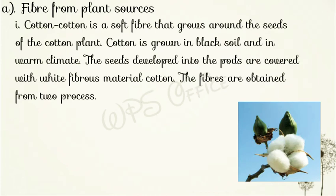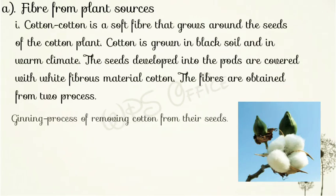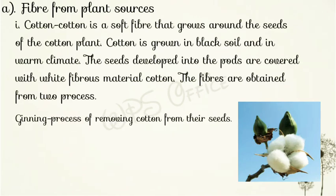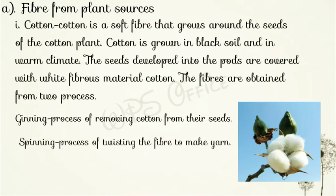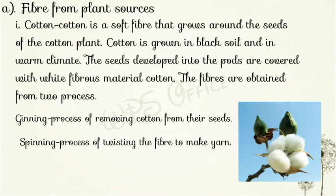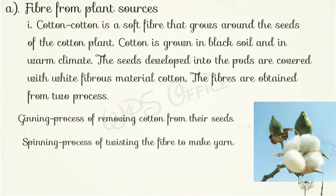The fiber is obtained from two processes. First ginning: the process of removing cotton fibers from the seed — जिसमें cotton के रेशों को उनके बीजों से निकाला जाता है। Second spinning: the process of twisting the fiber to make yarn — इस प्राप्त रुई (cotton) को धागे में बनाने की प्रक्रिया। यानी fiber से yarn बनाने की प्रक्रिया spinning कहलाती है।